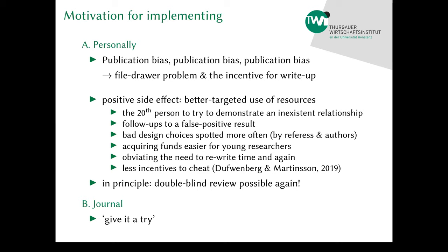Sometimes you follow up on a paper that was a false positive, and if you can reproduce the original results, you have a much harder time publishing that. It usually takes probably five to six papers to correct one false positive. Bad design choices can be spotted more often and earlier — not just by referees, but also by the authors who have to think more carefully about their own studies because they have to put everything down in detail.